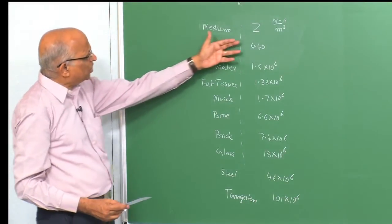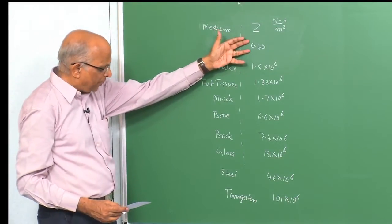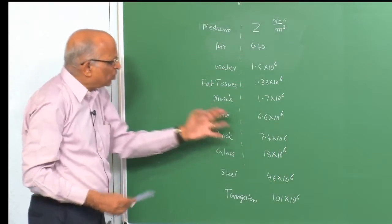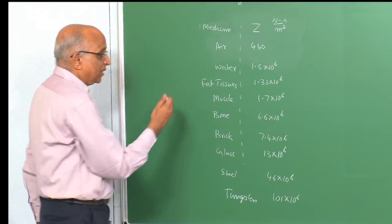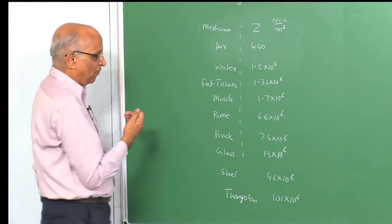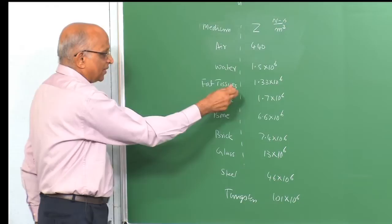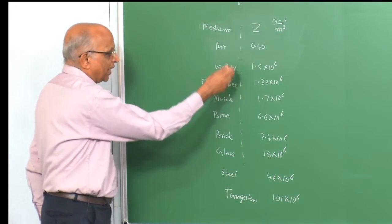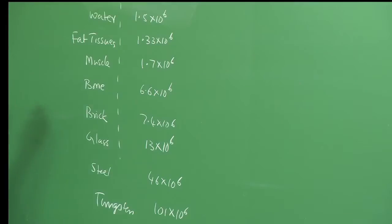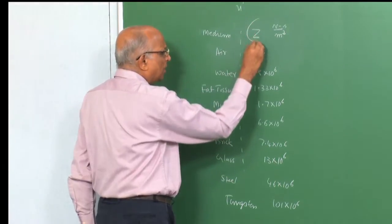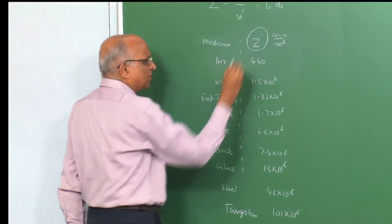You see that the values change from a few hundreds to several millions. It is these values which really decide whether the wave gets transmitted, how much gets reflected, and we will keep this as a reference to understand reflection and transmission of waves.